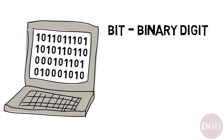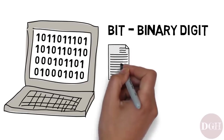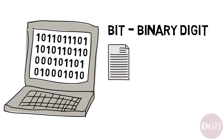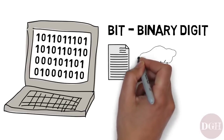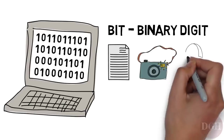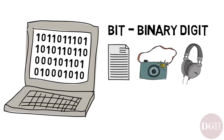Now, these bits — these ones and zeros — are used to store all kinds of information, from the text that appears on your screen, to the colors of an image, to the sounds that come out of your speakers. To store information like this, we use a bunch of bits together.